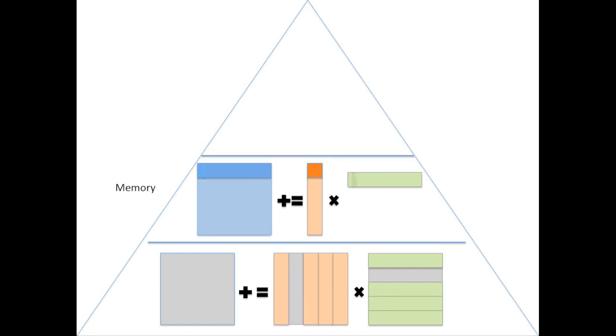In order to now compute one of those row panels of C, we do a block of A times these little slivers of B, updating a sliver of C. Each of those slivers is at width 4 in our discussion a second ago.